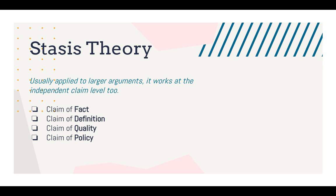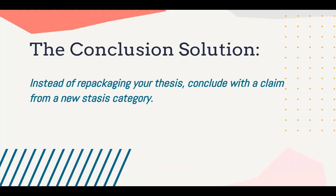Once you understand that every claim falls into one of those categories, you can start to manipulate your claims to fit one of the four. The solution to writing effective conclusions is, instead of repackaging your thesis, simply pivot to a new stasis category. If you've written an evaluative argument to this point, pivot to a policy claim to finish. You see this often in op-eds — a writer will evaluate an issue and then conclude with a call to action. In fact, in the synthesis essay on the AP Lang exam for years, we saw an invitation to do exactly this. Topics like daylight savings, the penny coin, the United States Postal Service, and monuments asked students to evaluate pros and cons — your central claim and line of reasoning — and then offer a recommendation about continued use, which is pivoting to a call to action or policy claim.